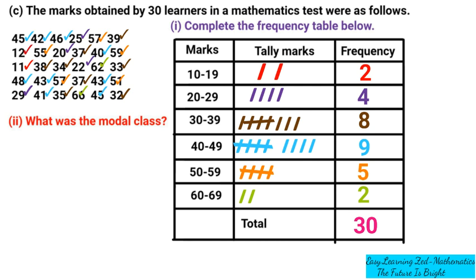Now let's go to question C2: what is the modal class? The modal class is the class of numbers that appears most frequently. Numbers between 30 and 39 appear eight times, and numbers between 40 and 49 appear nine times — those are the highest frequencies. Since nine is the highest, the modal class is 40 to 49. If you have questions, ask in the comment section, and let's move on to the next question.